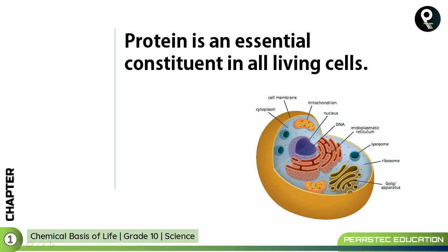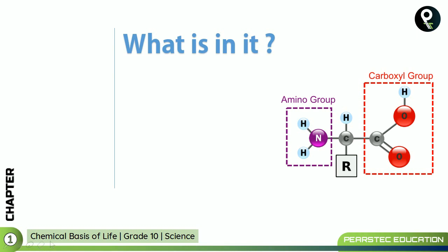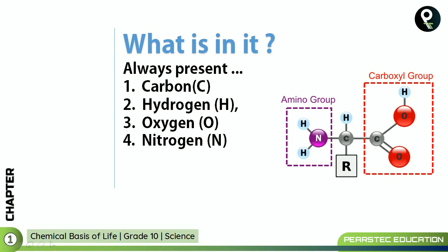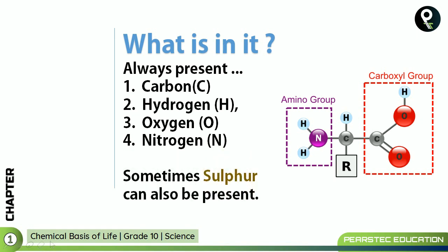Protein is an essential constituent in our living cells. Now, what is in this protein? Always present are carbon, hydrogen, oxygen, and nitrogen. When we were talking about carbohydrates, carbon, hydrogen, and oxygen were present, but in protein, nitrogen is also present. Sometimes sulfur can also be present in protein.